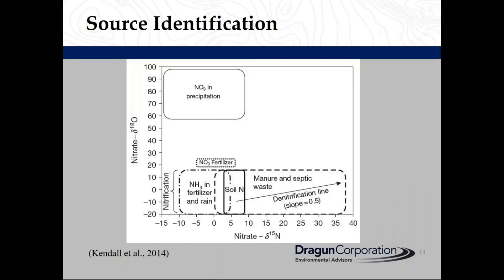We can also use isotopes to identify the source of nitrate in groundwater. This is the nitrogen versus oxygen plot by Kendall and others, which shows the range of delta values for oxygen and nitrogen for fertilizer, manure, septic waste, and other sources.